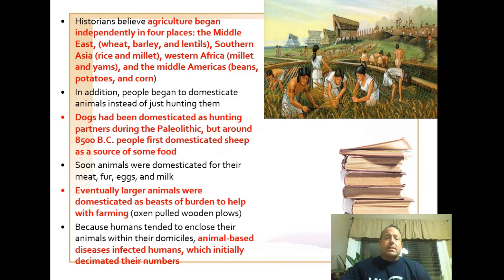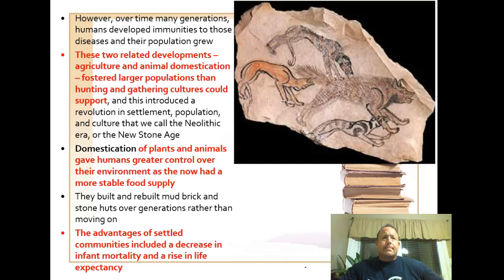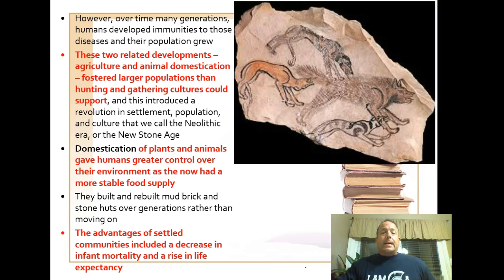Another change is that because people had less diverse diets, they had problems with nutrition. Skeletal remains show that people who transitioned from hunter-gatherers to settled farmers were shorter, demonstrating a connection between nutrition and overall height. However, populations were allowed to grow because food was more reliable and they could grow a surplus. This allowed the most vulnerable age groups — the young and the old — to survive, with less infant mortality and extended lifespans.